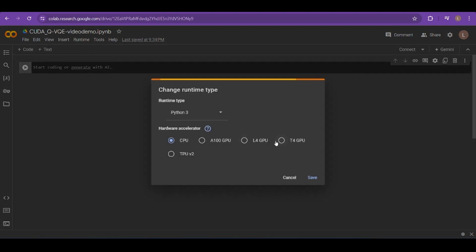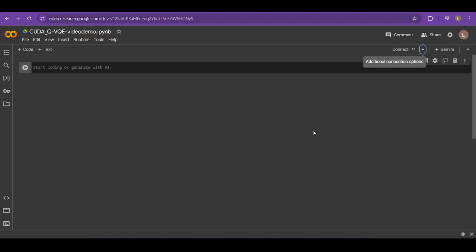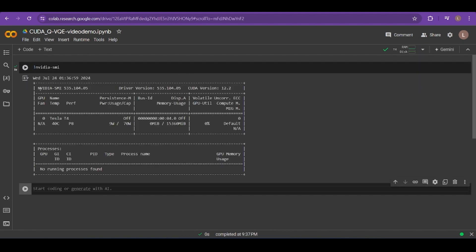First, let's just check to make sure that our Colab notebook is actually connected to a GPU. If it is, we should see a checkmark and then the GPU name in the top right corner. In my case, this is the NVIDIA T4 GPU. Next, we can run the NVIDIA SMI command, which should tell us that there is a GPU that we're connected to with some drivers and a version of CUDA.